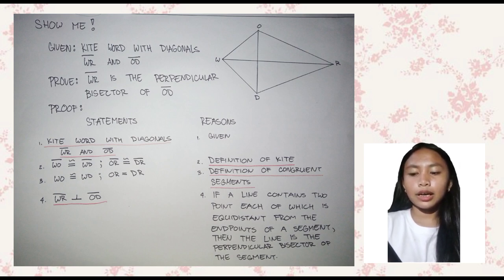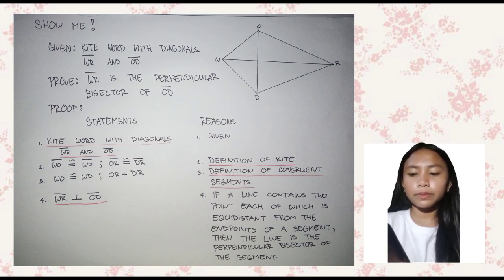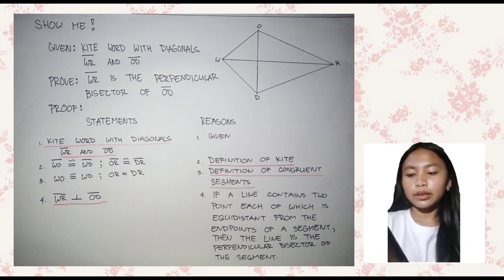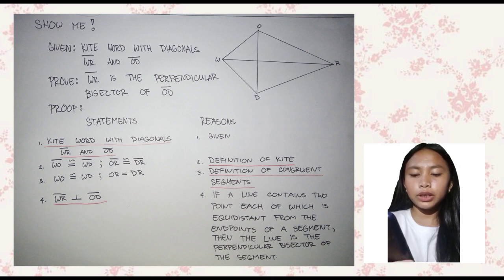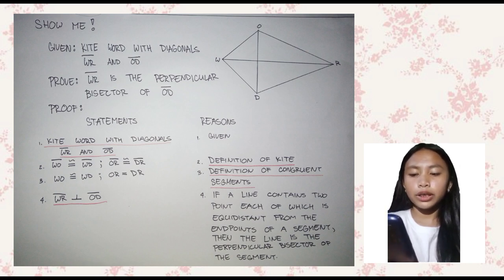Statement 1: Kite WORD with diagonal segment WR and segment OD. Reason: Given. Statement 2: Segment WO is congruent to segment WD, and segment OR is congruent to segment DR. Reason: Definition of kite. Statement 3: WO equals WD and OR equals DR. Reason: Definition of congruent segments. Statement 4: If a line contains two points each equidistant from the endpoints of a segment, then the line is the perpendicular bisector of that segment. Therefore, segment WR is perpendicular to segment OD.